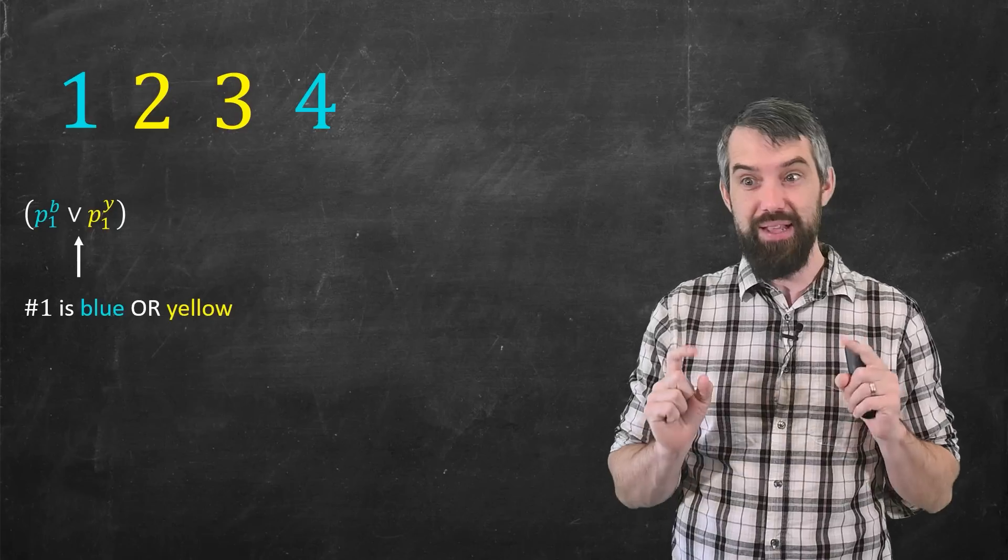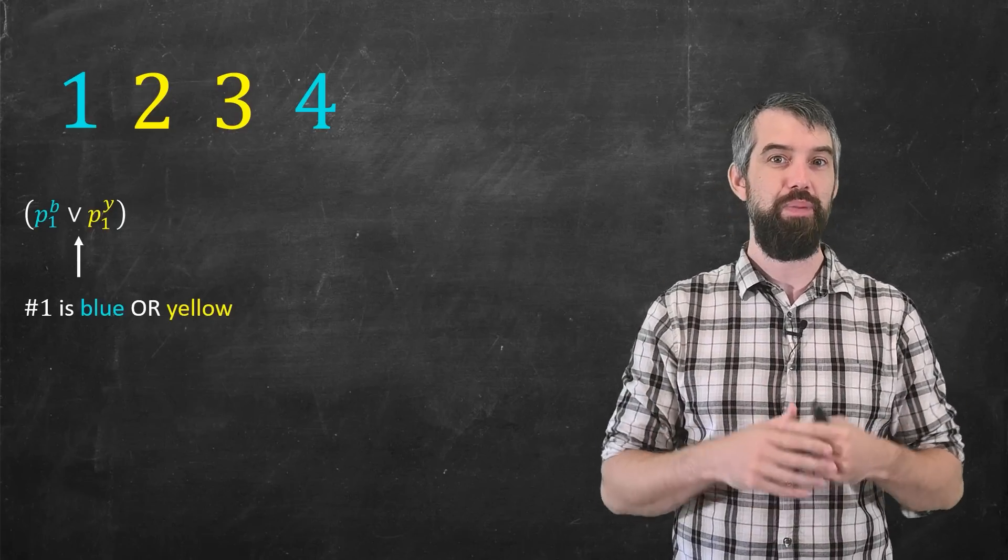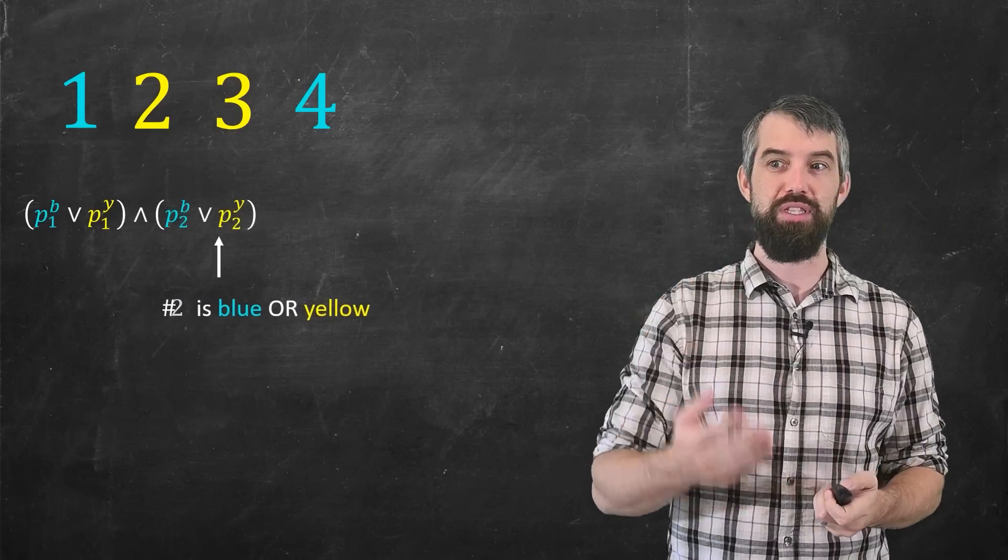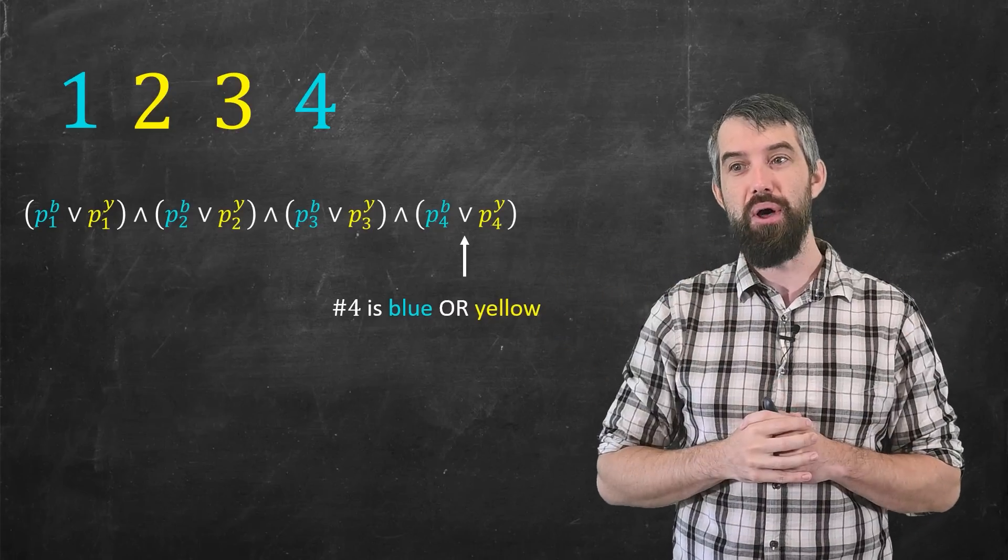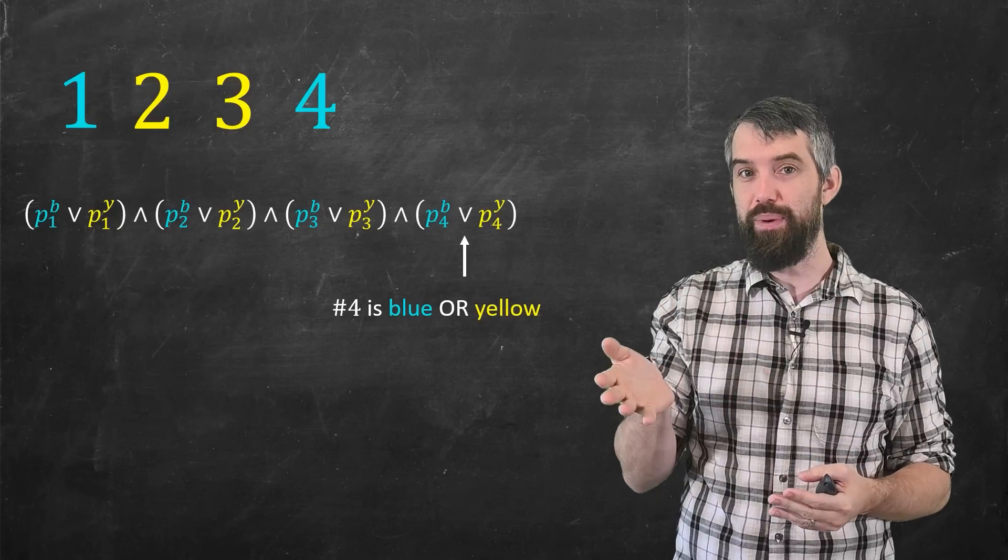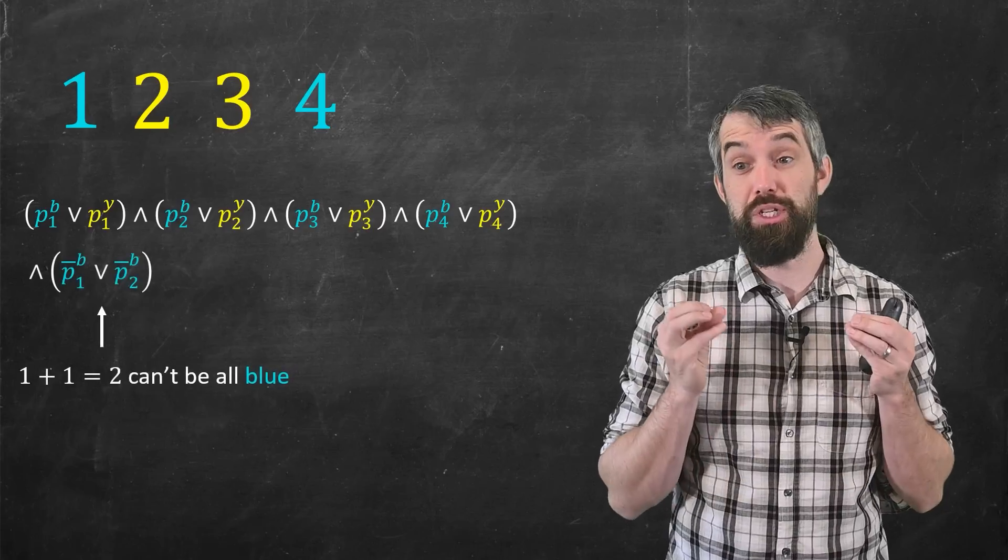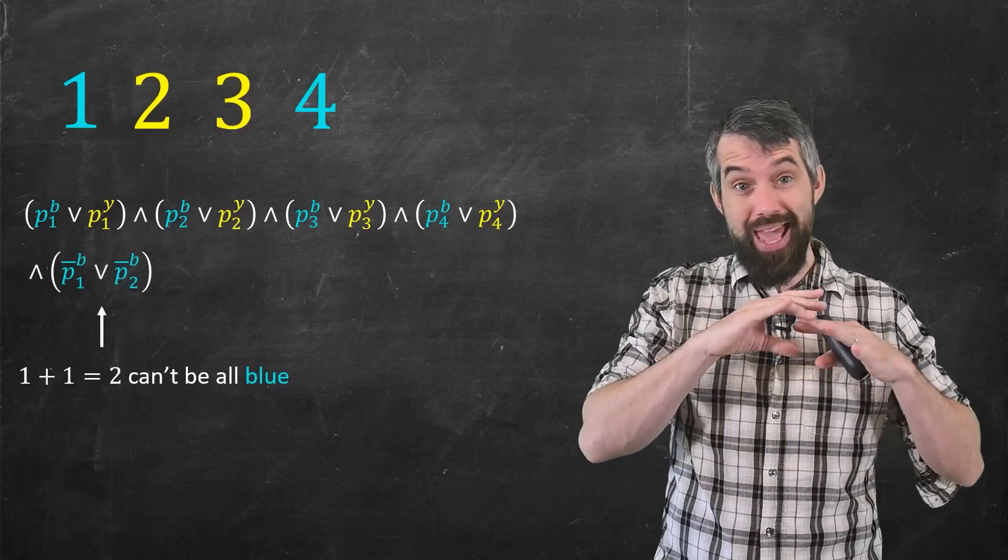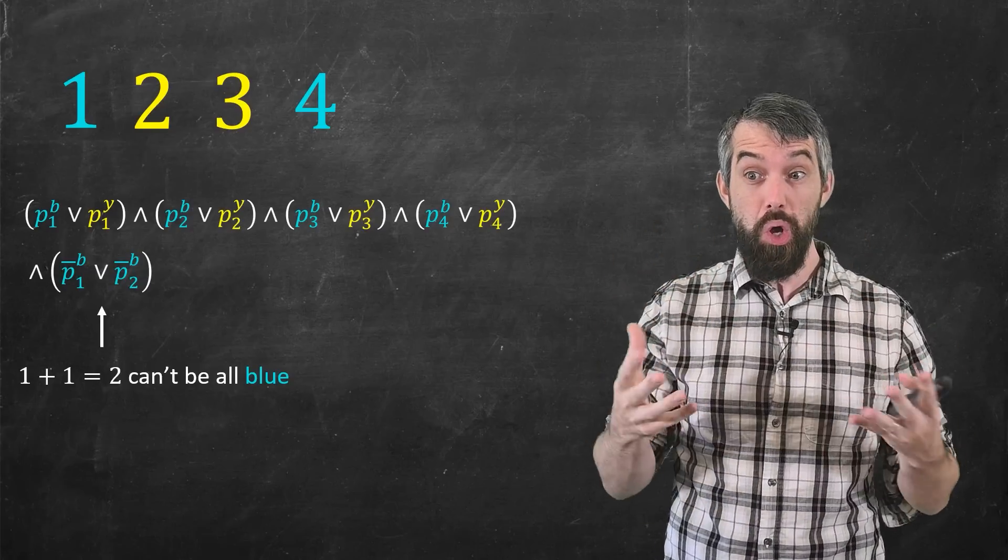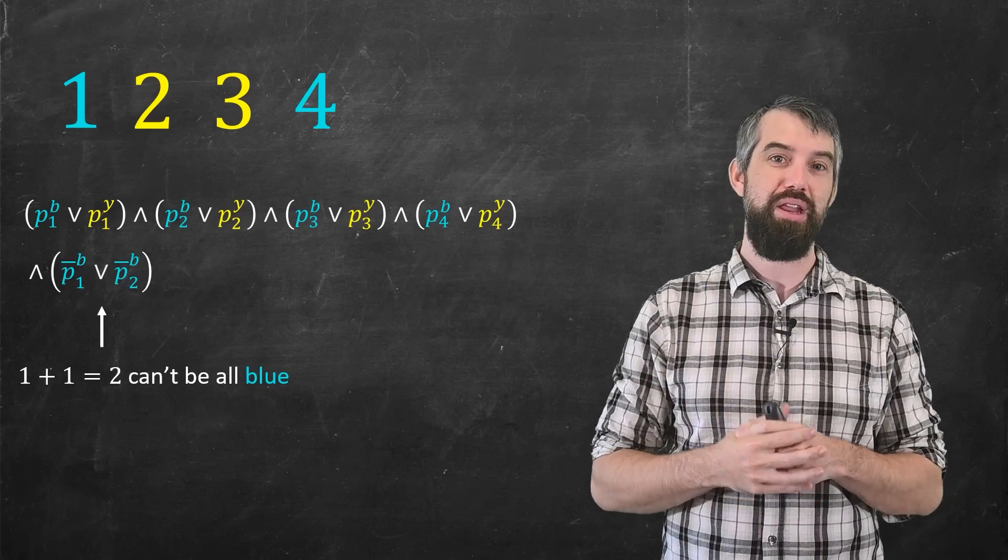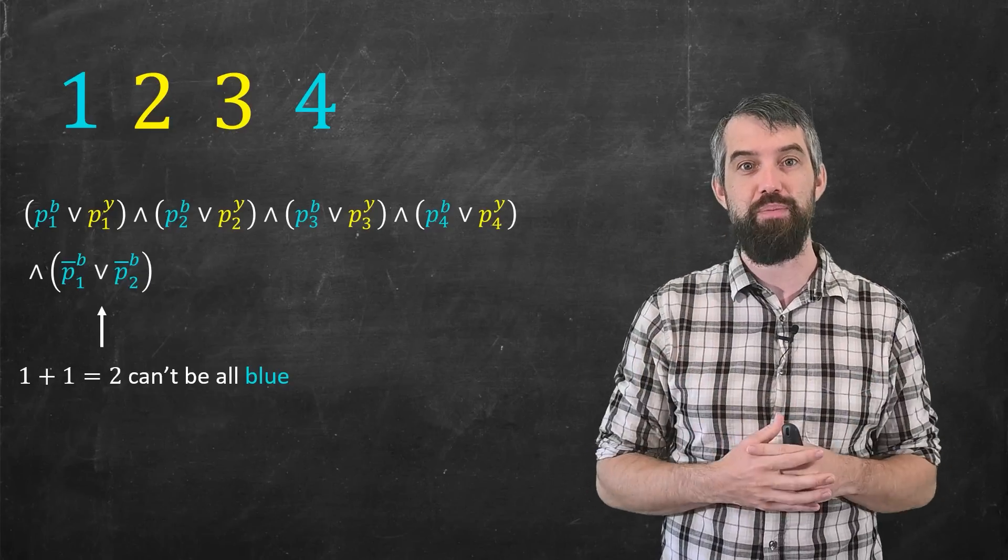The first number, that's the subscript, is either blue or yellow. Then I can say, same kind of idea for the second number, right? p_2^b or p_2^y. Do the same for the third and do the same for the fourth. So these four clauses, the things in brackets I'll call a clause, represent saving each of the four numbers to one of the two different colors. And now I've got to do the a plus b equal to c business. So the way I will assert that 1 plus 1 equal to 2 can't be all blue is to use negations in my clause. The bar on the top means not.